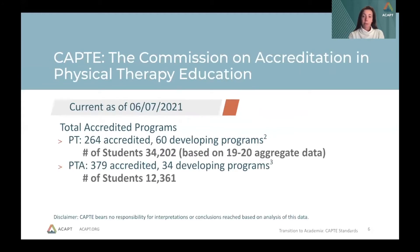Some quick and interesting numbers surrounding physical therapy education: there are currently 264 accredited programs with 60 more in development, resulting in over 34,000 physical therapy students. In addition, there are 379 accredited physical therapy assistant programs with 24 developing, creating an additional 12,000 physical therapy assistant students in the profession. These numbers, which are continuing to trend upward, highlight the importance of qualified and engaged academicians in the field, as well as the success of the profession of physical therapy.